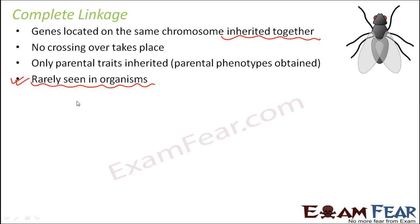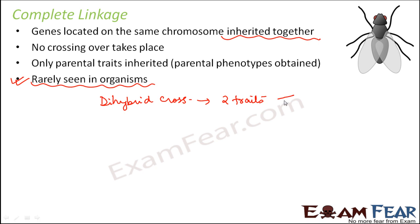If you do a dihybrid cross of Drosophila considering two traits — the wing type and the eye color — by now you already know the wing type and what traits we will consider in the dihybrid cross.